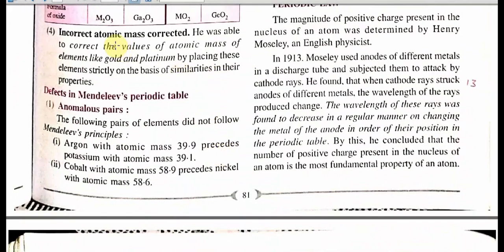Comparing Eka-aluminium predictions with gallium: atomic mass predicted 68, found 69; density predicted 5.90, found 5.91; melting point low — 302 K is just 29°C, meaning it will melt in your hand; valency 3. Mendeleev was very, very accurate. He also corrected the values of atomic mass of gold and platinum by placing them in his table.